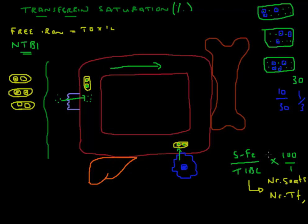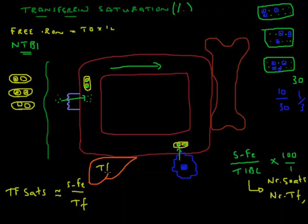We can rewrite the formula as: transferrin saturation approximately equals serum iron over transferrin molecules. Anything that affects serum iron or changes the number of transferrin molecules will change the transferrin saturation. The liver is responsible for producing transferrin, so in liver disease, transferrin goes down, and since there are fewer molecules, the transferrin saturation value — iron over transferrin — goes up, which is exactly what we see clinically.